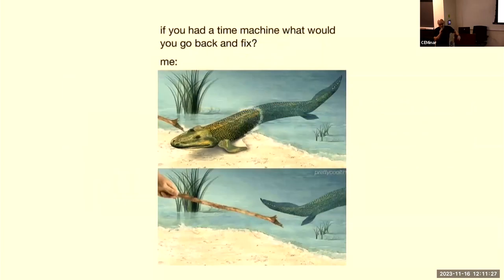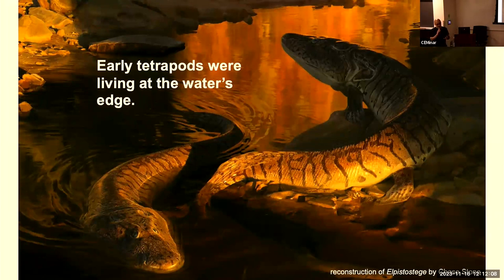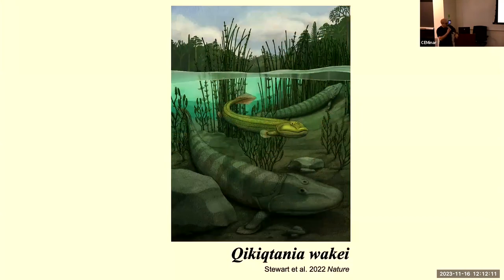The other reason Tiktaalik is important is that it has become an icon for science communication — people often use it as a textbook case study for evolution, and it has been memefied over the years. But that meme does capture real biology: animals like Tiktaalik and other early tetrapods were living right at the cusp of the water-to-land transition, at the edge of the water, with anatomical features basically intermediate between a fully aquatic animal and features we associate with life on land.